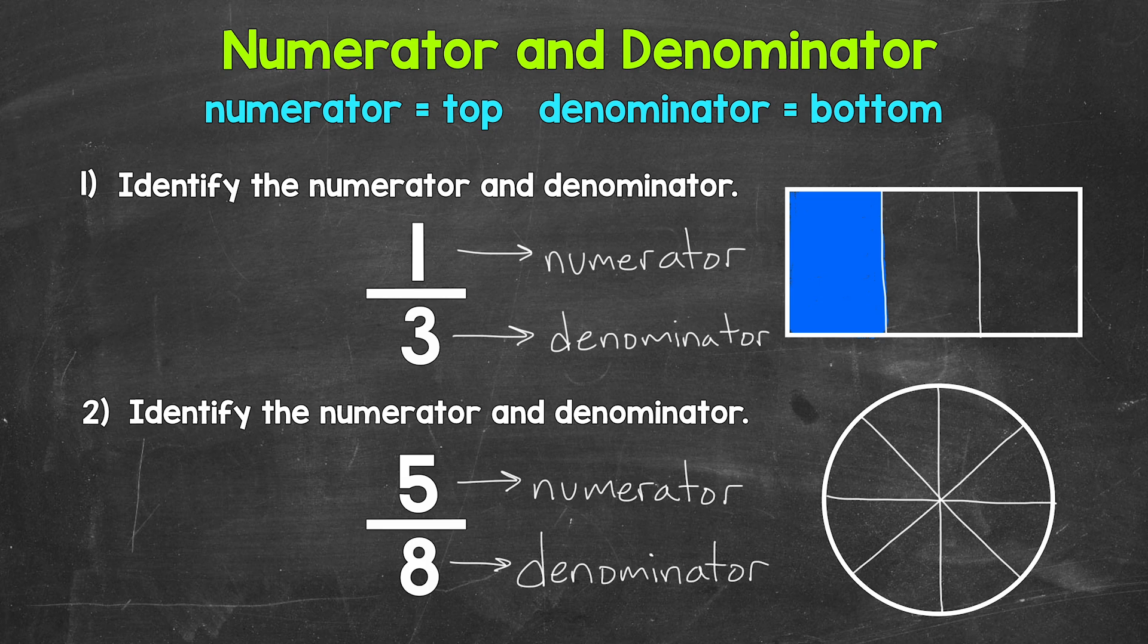Let's move on to the numerator now, which is 5. So we need 5 equal parts out of 8 total equal parts shaded in. So 1, 2, 3, 4, 5. And that's it. There's 5/8. 5 equal parts out of the 8 total equal parts.